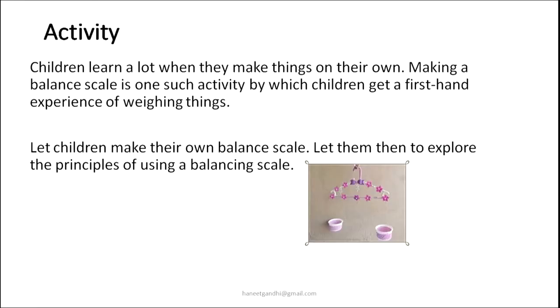Children learn a lot when they make things on their own. Making a balance scale is an activity in which children get a first-hand experience of weighing things. It's a very simple exercise — you only need a traditional hanger which is very easily accessible, and two containers to place things in: perhaps two cups, two katoris, two pans. Anything light can be used. Make sure the thread you use is equidistant, with no wobbling between the cups. When you put it up empty, both pans should balance at the same height. This homemade balance scale made from everyday materials gives a very quick understanding of balancing weight.